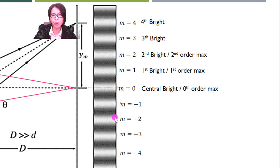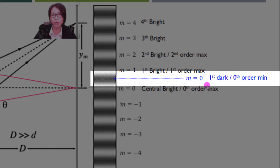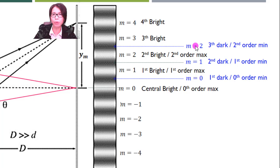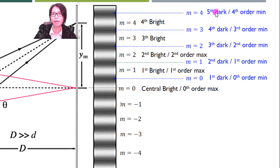Besides the bright fringe, we also observe dark fringes due to destructive interference. On either side of the central bright, we have the first dark corresponding to M equal to 0, also called zeroth order minima. Followed by second dark corresponding to M equal to 1, or first order minimum; third dark M equal to 2; fourth dark M equal to 3; fifth dark M equal to 4, and so forth.